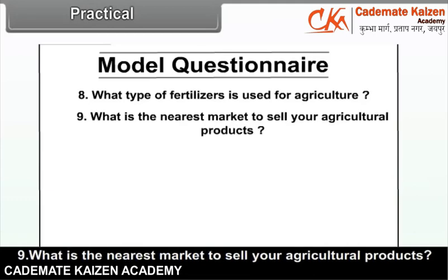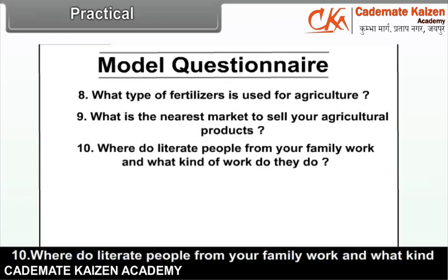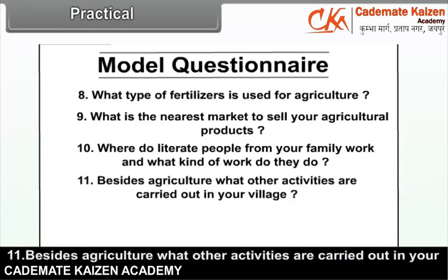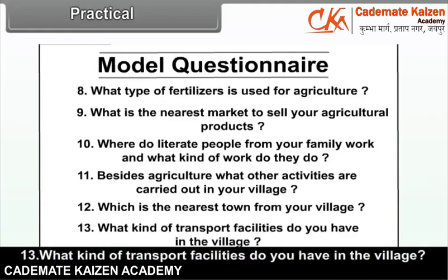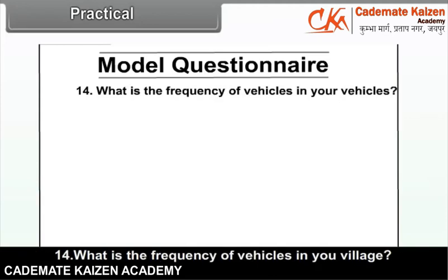What type of fertilizers are used for agriculture? Which is the nearest market to sell your agricultural products? Where do literate people from your family work and what kind of work do they do? Besides agriculture, what other activities are carried out in your village? Which is the nearest town from your village? What kind of transport facilities do you have in the village? What is the frequency of vehicles in your village?